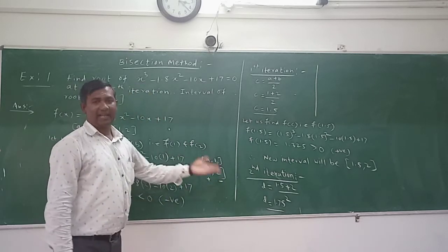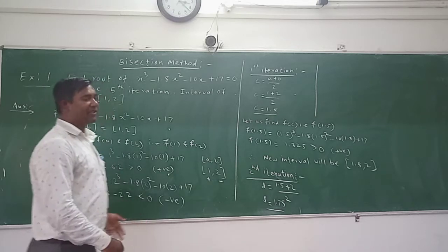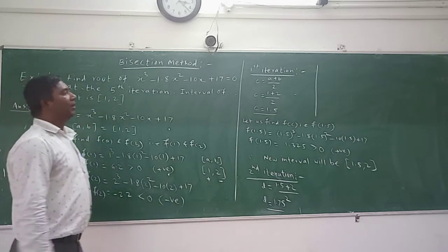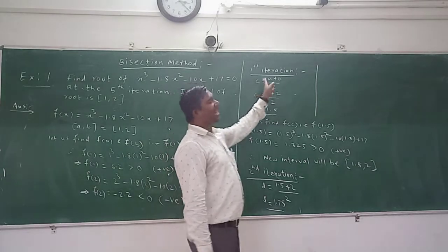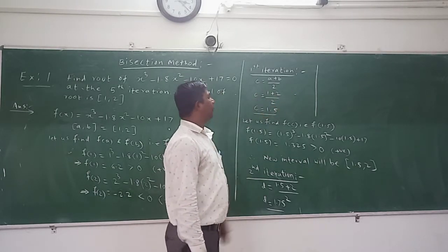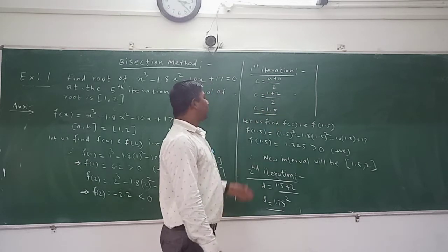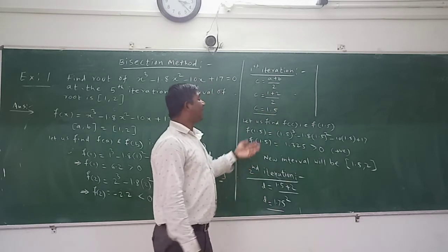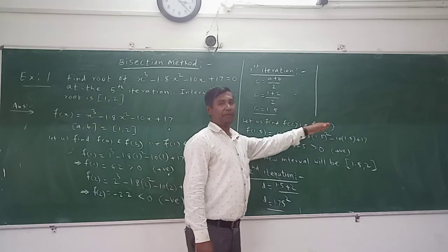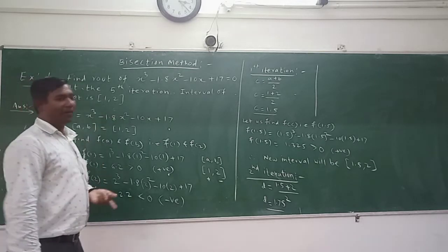So now first iteration. The first approximate root we will take between A and B. So that is c, it will be 1 plus 2 divided by 2, about 1.5. So what we will do? We will find f of c, means we will find f of 1.5. So again in the same equation we will replace x by 1.5.